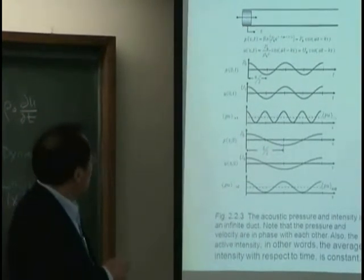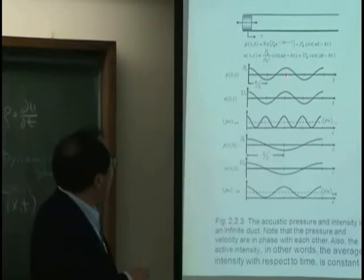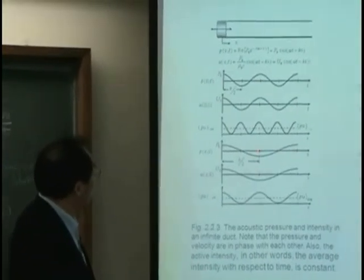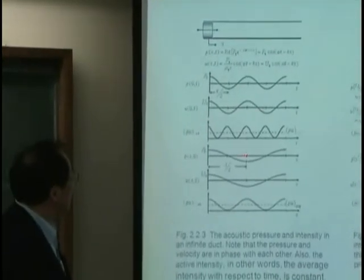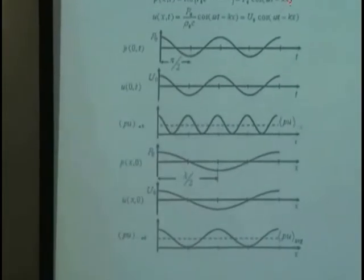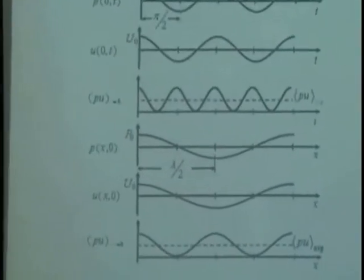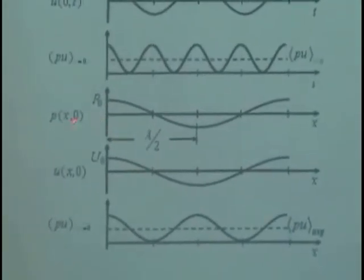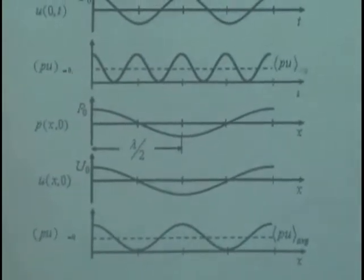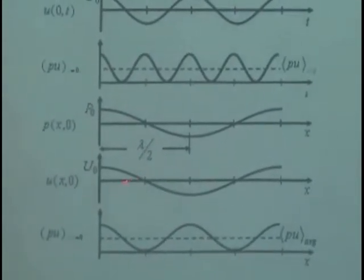What about the intensity at a certain point over here? If I measure intensity at x equal 2 over lambda, then px at time t equal 0, I put t equal 0 and draw it, then it look like this.